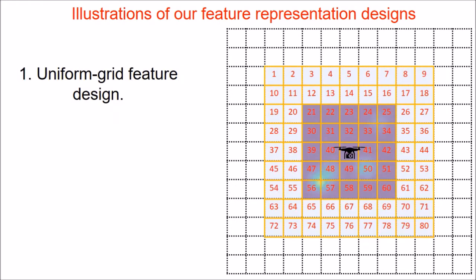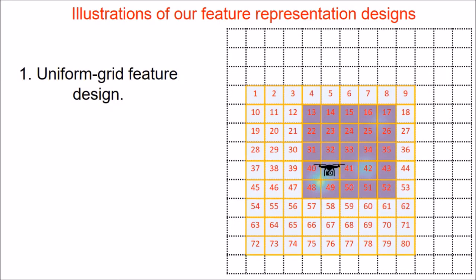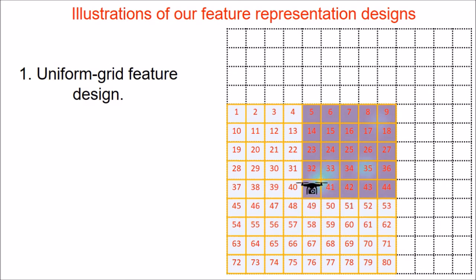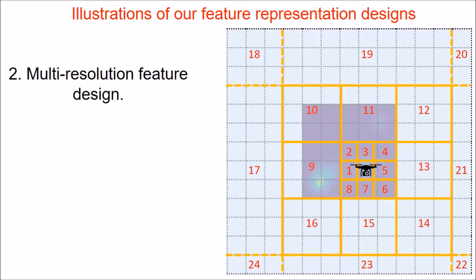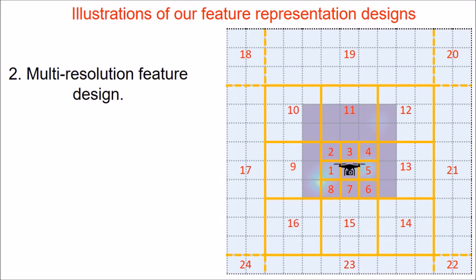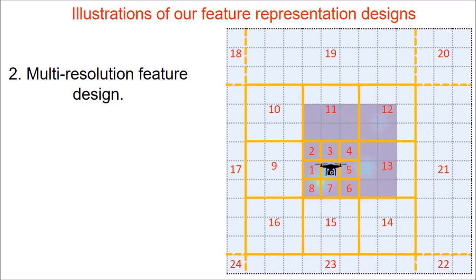Uniform grid feature design uses all the grid cell values to make a decision on the action to be taken. In the multi-resolution aggregation, the feature cells grow in size along with the distance from the robot location as depicted.